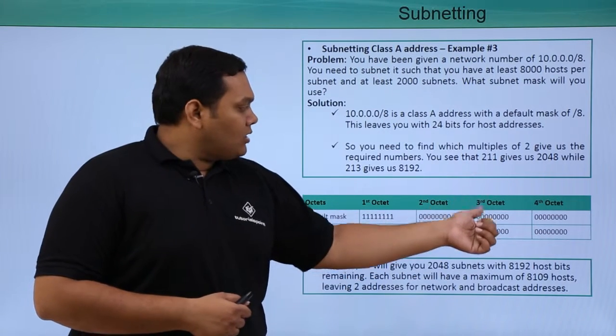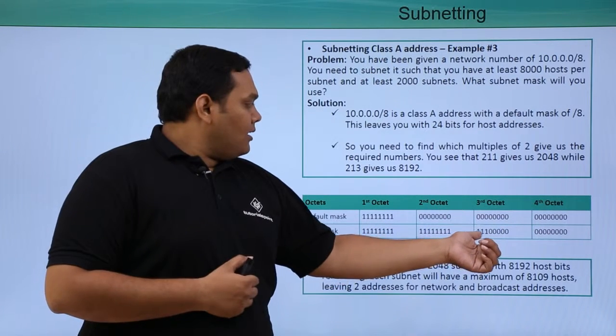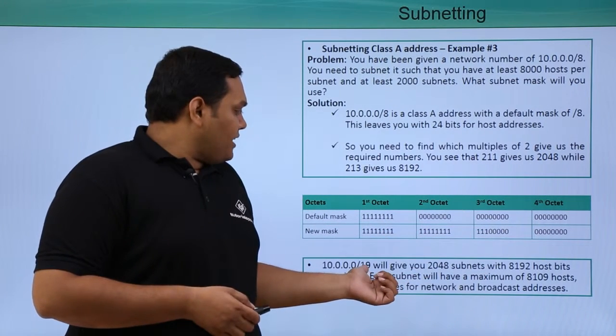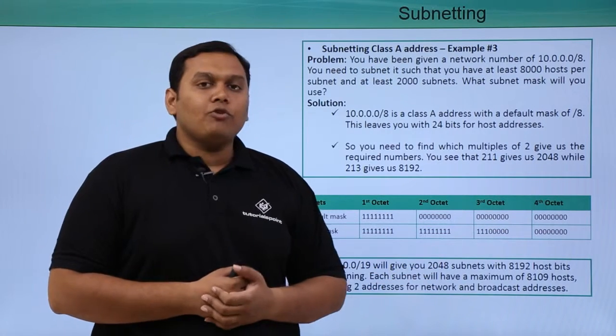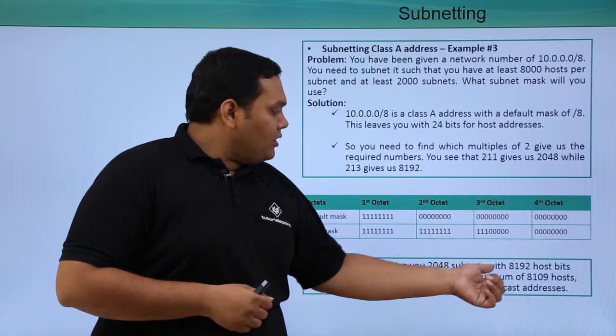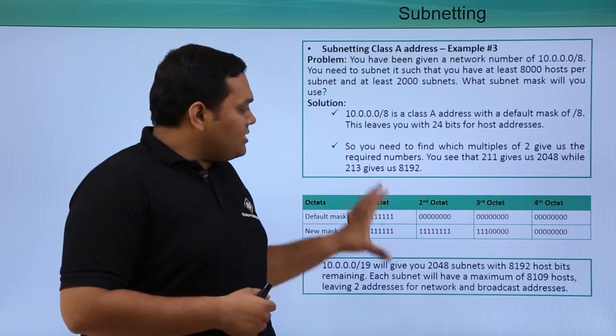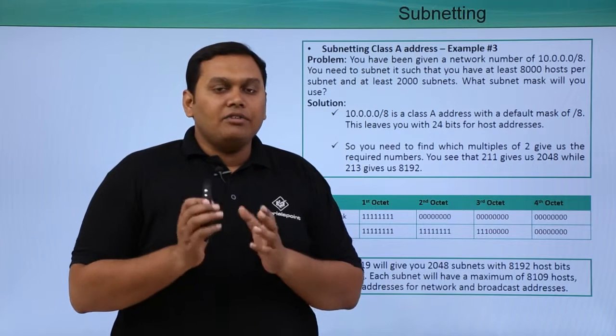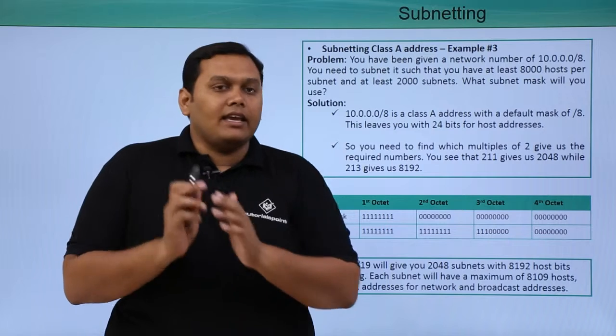The default and new mask is created here. The first octet is as-is. The second octet has been borrowed, and also the third octet - 3 bits have been borrowed. Totally, 8 plus 11 gives us 19. The /19 notation will give you 2048 subnets and 8192 hosts. This is the actual scenario we use to divide the subnets for Class A.